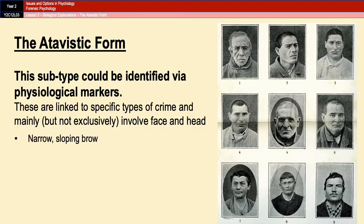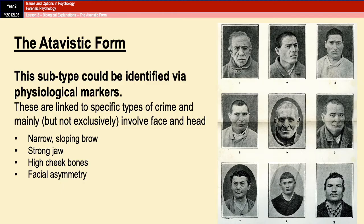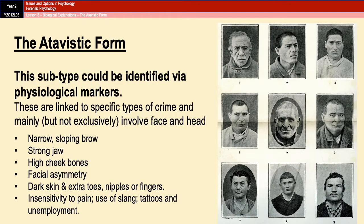Examples of atavistic features include a bullet-pointed list — they are all features that involve the face and head. However, aside from those traits, Lombroso also said that characteristics could include dark skin, extra toes, nipples, or fingers. He also said that it could include an insensitivity to pain, the use of slang when talking, having tattoos, and being unemployed.